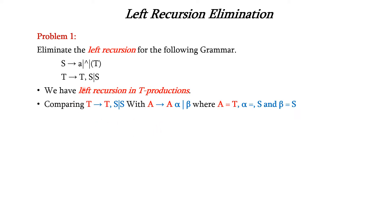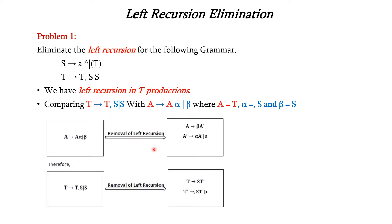Let us compare this T production with the general production. In the position of A, we have T. In the position of alpha, we have comma S, and in the position of beta, we have S. So we have T → T, S | S. Let us use this general technique to solve the left recursion in this production.